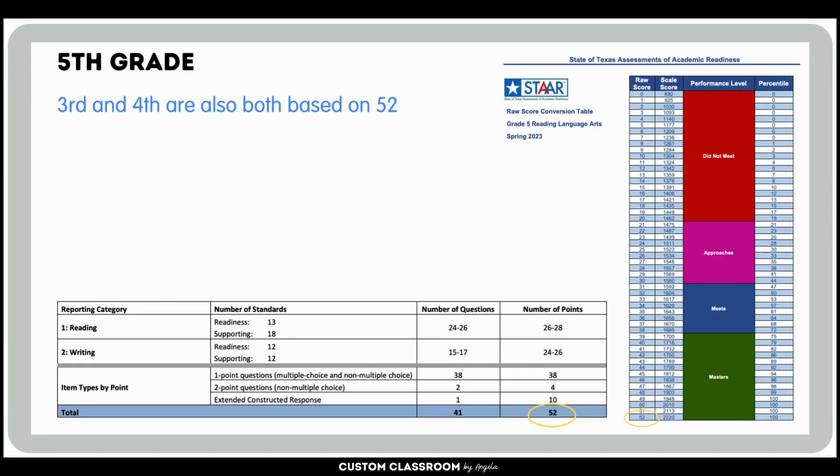As you can see on this 5th grade test, there are 41 questions with a total of 52 points. This is the same as the 3rd and 4th grade test. 10 of these points come from ECR questions.